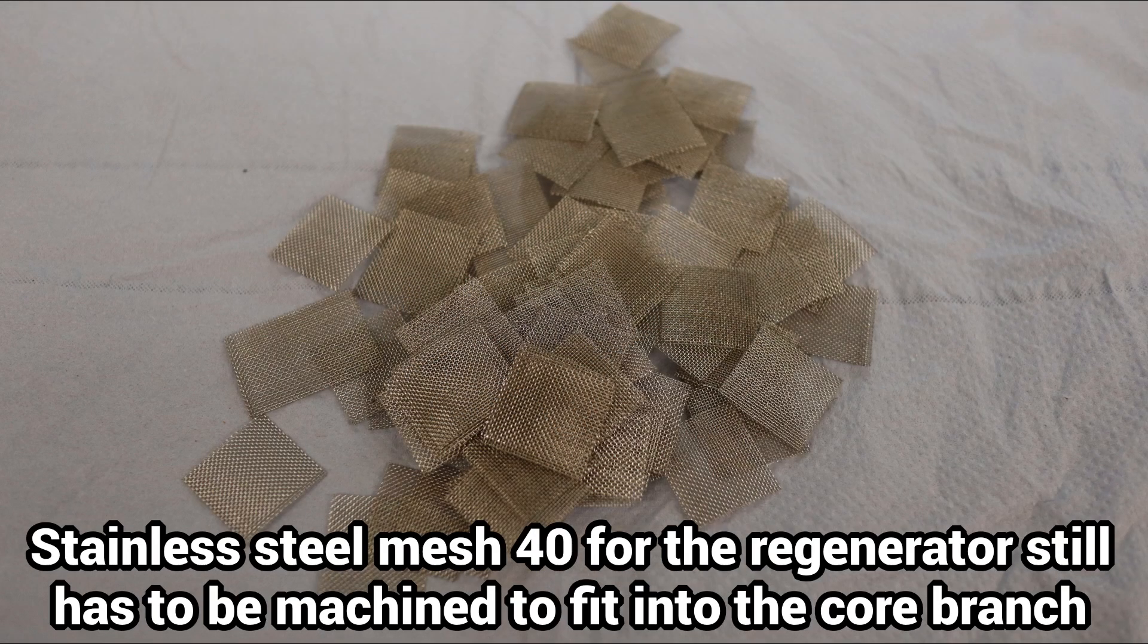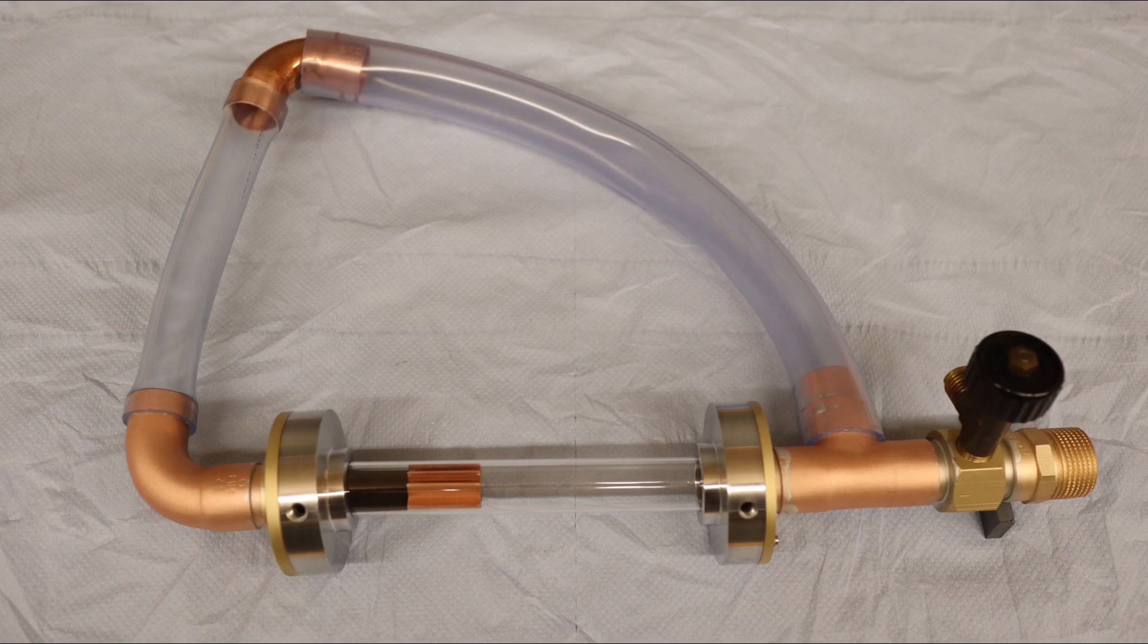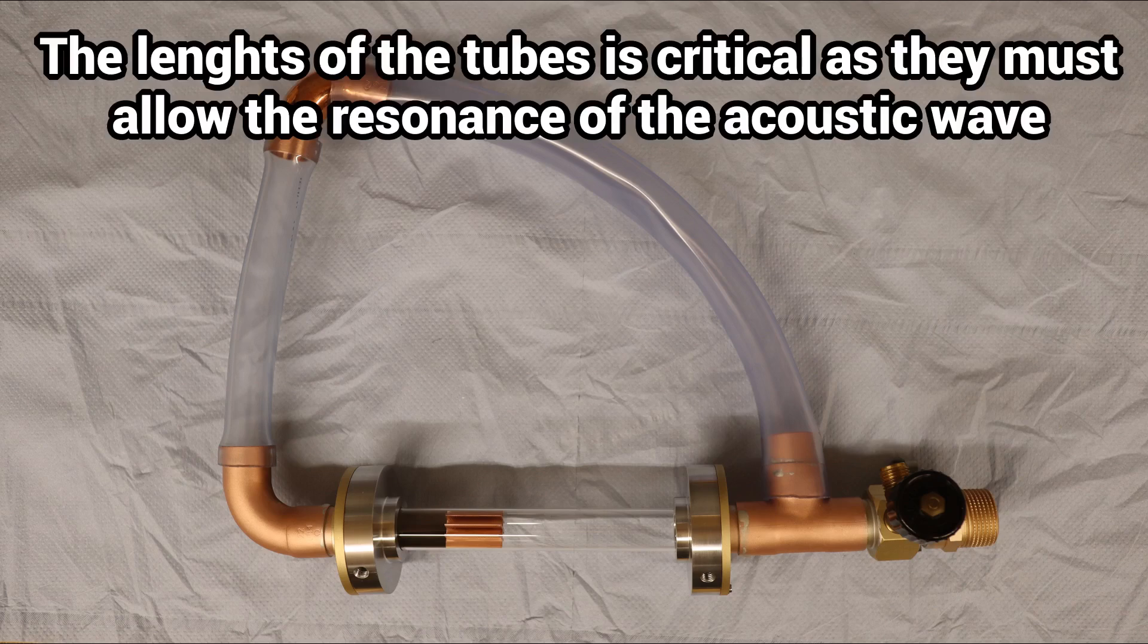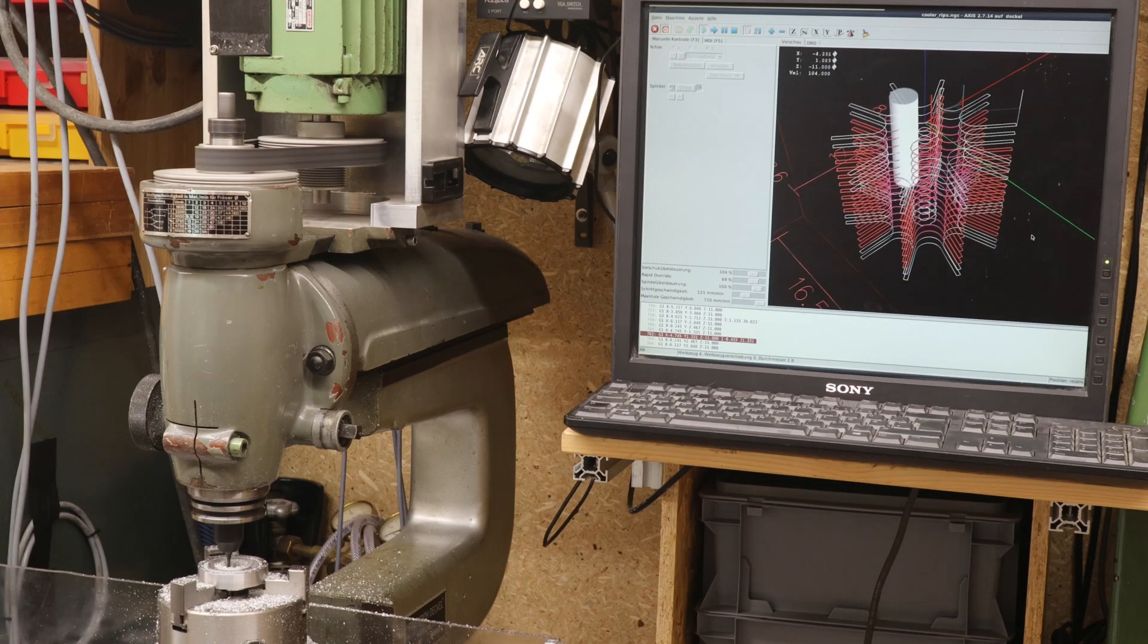Now only the regenerator is required and then work can begin on adjusting the length of the feedback branch. I am now taking some time to finish the thermoacoustic engine and then carefully align the tubes. I hope that the length and volumes are not too difficult to adjust and that I will soon be able to report on a running thermoacoustic engine.